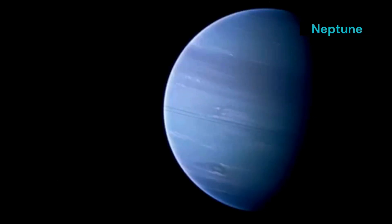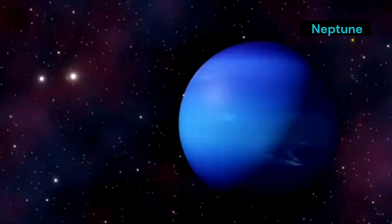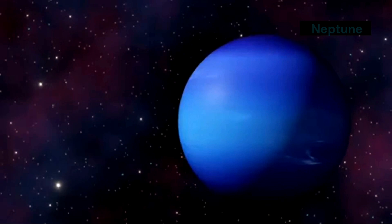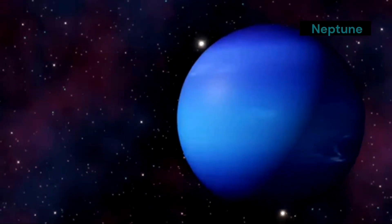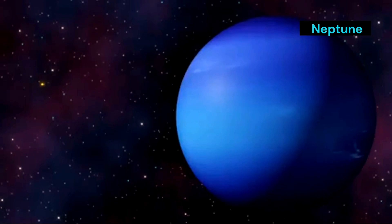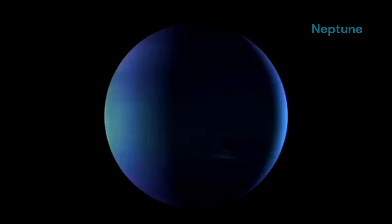Neptune is a giant. It is one of the most fascinating planets in our solar system, often referred to as the Blue Giant due to its striking blue appearance. It is the eighth planet from the sun, located at an average distance of about 4.5 billion kilometers or 2.8 billion miles from our star and the furthest known planet in our solar system. This distant position means it takes Neptune about 165 Earth years to complete one orbit around the sun.